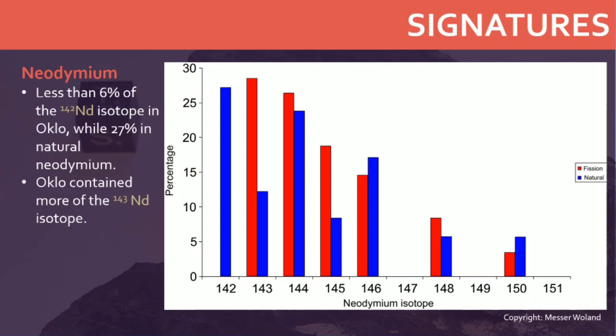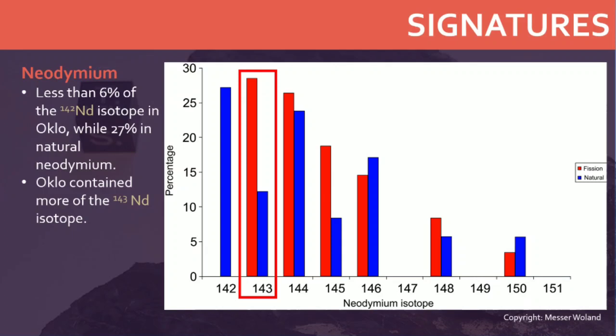Neodymium and other elements were found with isotopic compositions different from what is usually found on Earth. For example, Oklo contained less than 6% of the neodymium-142 isotope, while natural neodymium contains about 27%. However, Oklo contained more neodymium-143. Subtracting the natural isotopic neodymium abundance from the neodymium abundance at Oklo, the isotopic composition matched that produced by the fissioning of uranium-235 at Oklo.